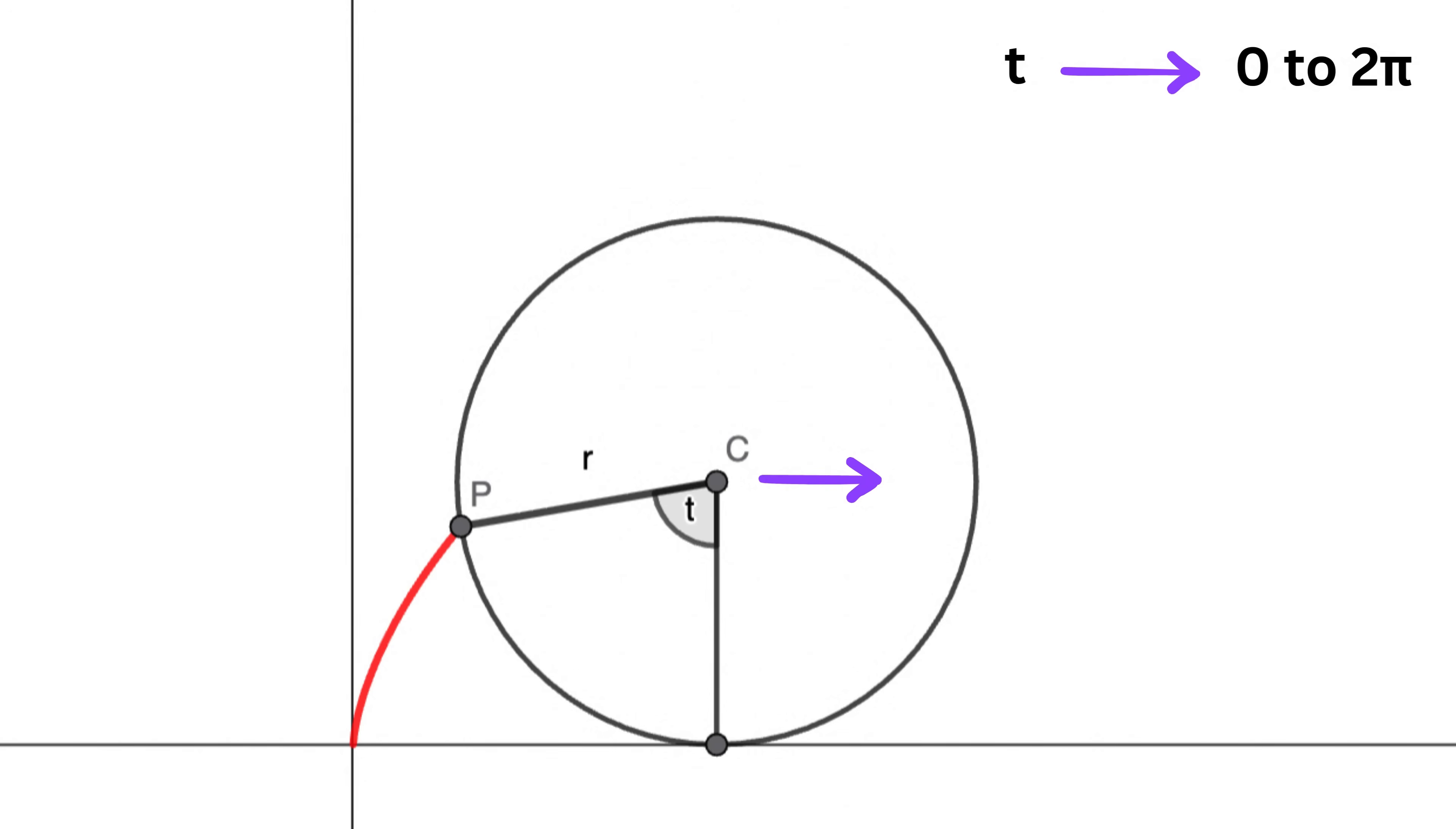the circle is constrained to roll along a straight, flat surface without slipping. And point P moves around the circle relative to the center.